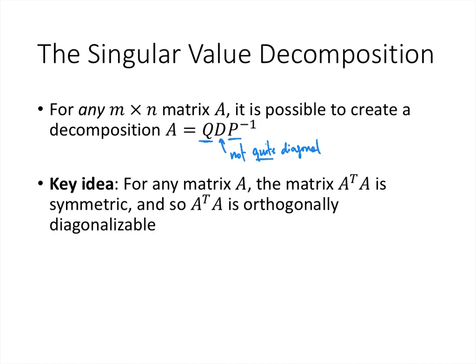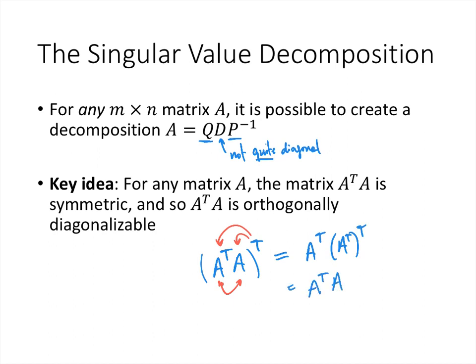The key idea that's going to make this work is that no matter what matrix A we have, the matrix A transpose A is symmetric. Because when we take A transpose A and take its transpose, using the fact that the transpose of a product is the product of the transposes in reverse order, we get A transpose times A transpose transpose — but that's A transpose A, which is the same as what we started with.